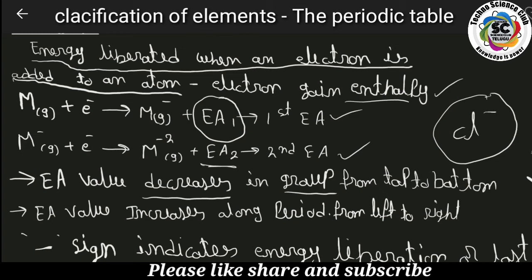As atomic radius increases, the attraction between the nucleus and the electrons in the outermost shell decreases. Because of the large atomic size, the attraction on the outermost shell electrons is not effective, and so the electron affinity value decreases going from top to bottom in a group.